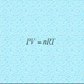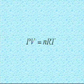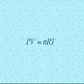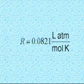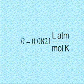Pressure is commonly expressed in units of atmospheres, abbreviated ATM, and volume is expressed in units of liters, abbreviated L. This gives the following value for the universal gas constant.